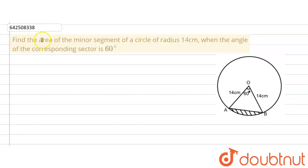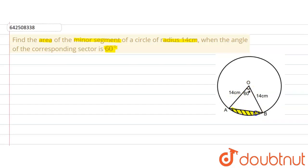The given question says: find the area of the minor segment of a circle of radius 14 centimeters when the angle of the corresponding sector is 60 degrees. There is a sector with angle 60 degrees, and the minor segment is the region we need to find the area of.